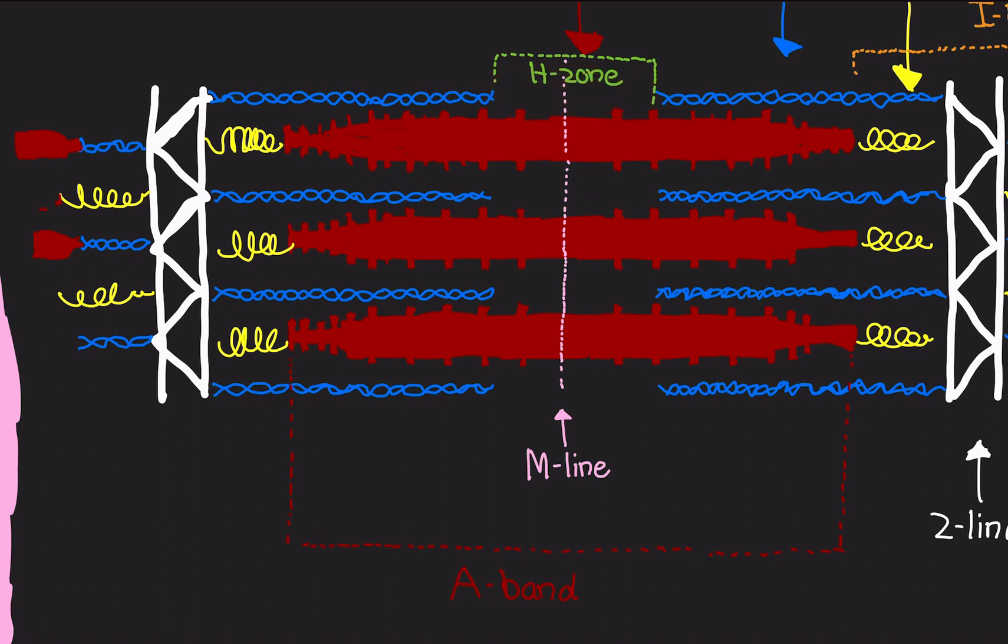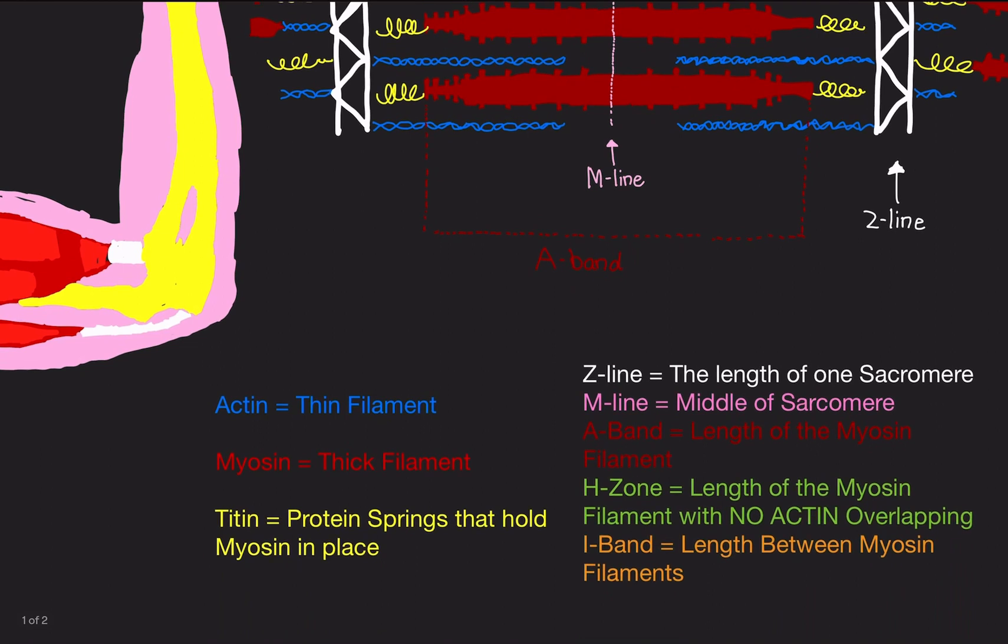So the actin, just to make sure you understand, the actin doesn't go all the way down across Z-line to Z-line. There's a gap here. There's no actin here. Basically, the gap where there's no actin and only myosin is called the H-zone. So it's the length of the myosin filament with no actin overlapping.